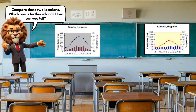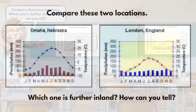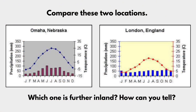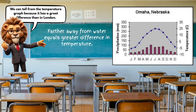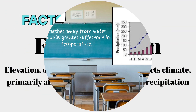Now let's compare these two locations. Which one is further inland and how can you tell? Omaha, Nebraska is landlocked in the United States. Farther away from water equals a greater difference in temperature, which we can see on its graph.